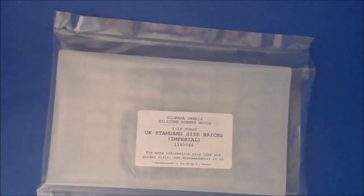This is a 1/16th UK standard size brick imperial. The mold number is 001-1600-006. It's produced in the UK by RJ Norris. So we've got that bit out the way.